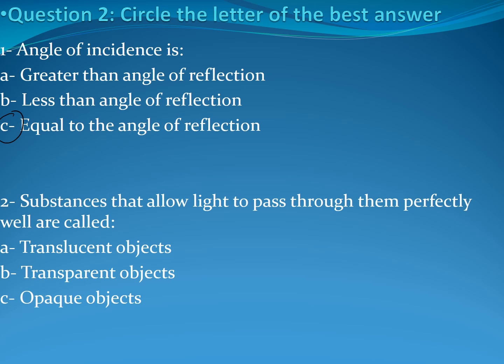Number two: substances that allow light to pass through them perfectly well are called A) translucent objects, B) transparent objects, or C) opaque objects. The answer is transparent, not translucent. Translucent objects allow only part of the light to pass through.